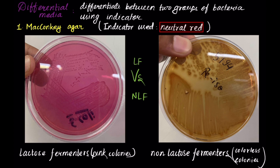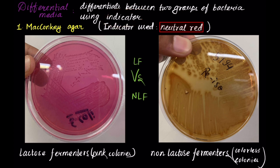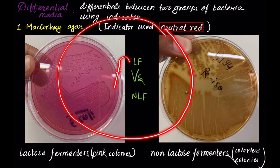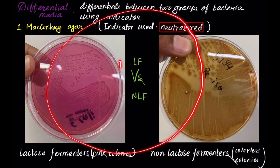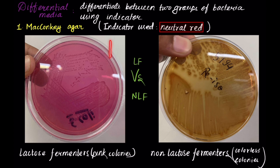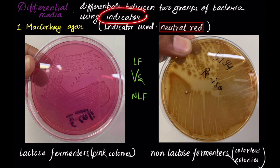Next is differential media. Differential media is used to differentiate between two groups of bacteria using an indicator. For example, you inoculate bacteria A into a differential media — the indicator in the media changes color. Similarly, you inoculate bacteria B into the same differential media, but this time the color of the indicator does not change. In this way, you are able to separate bacteria A from bacteria B just by visualizing the change in color of the indicator.